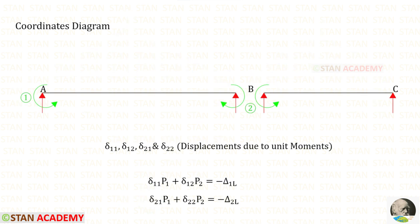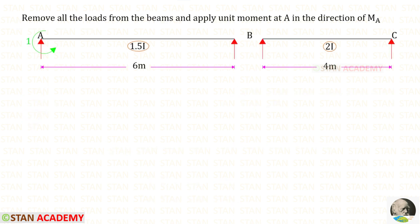Now we are going to find the four displacements: delta 1,2 and delta 2,1 will be the same. First, let us find delta 1,1 and delta 1,2. For that, we apply a unit moment in the direction of the first coordinate MA. All loads are removed and unit moment is applied in the direction of MA. Using the conjugate beam method, we draw the M upon EI diagram. Taking beam AB with the right-hand side rule: at point A we have unit moment acting anticlockwise, so it is negative; at point B it is a simply supported end so the moment is 0. M upon EI equals minus 1 upon 1.5EI, and since it is negative, the UVL acts upwards.